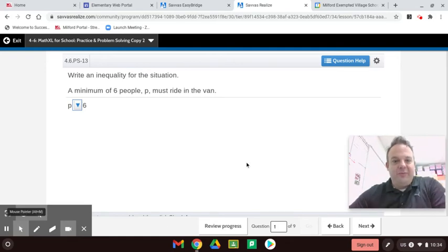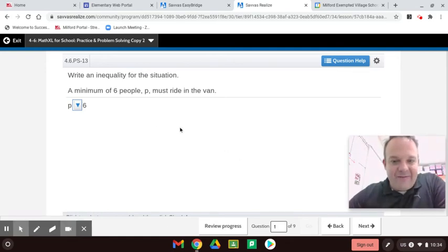A minimum of six people, P, must ride in the van. A minimum of six people. So that means in order to rent the van, you've got to have at least six people riding in it.